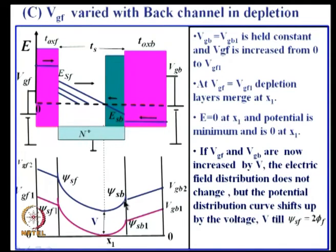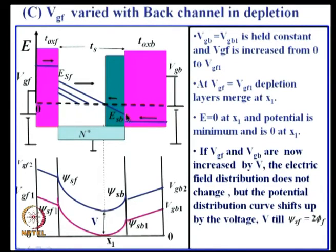For the general case where the electric field has 0 somewhere inside, the average field is (psi_sf − psi_sb) / T_silicon. The front surface field E_SF = average + Q_s / (2·epsilon_s), and the back surface field E_SB = average − Q_s / (2·epsilon_s). This can be solved via Poisson's equation, but the surface potential method gives it simply for any bias condition.